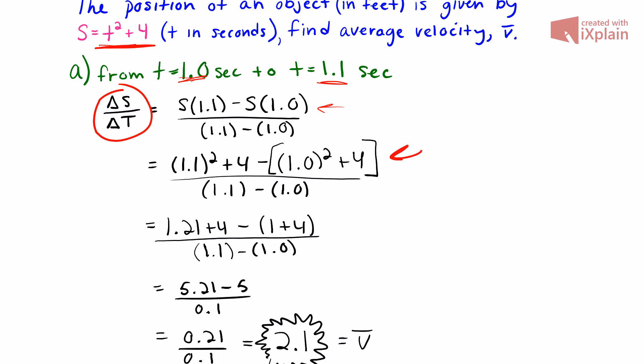It's going to be (1.1)² + 4, and that's subtracted by our initial time incorporated into that function, which is (1.0)² + 4, and that's all over our change in time, which is 1.1 - 1.0.